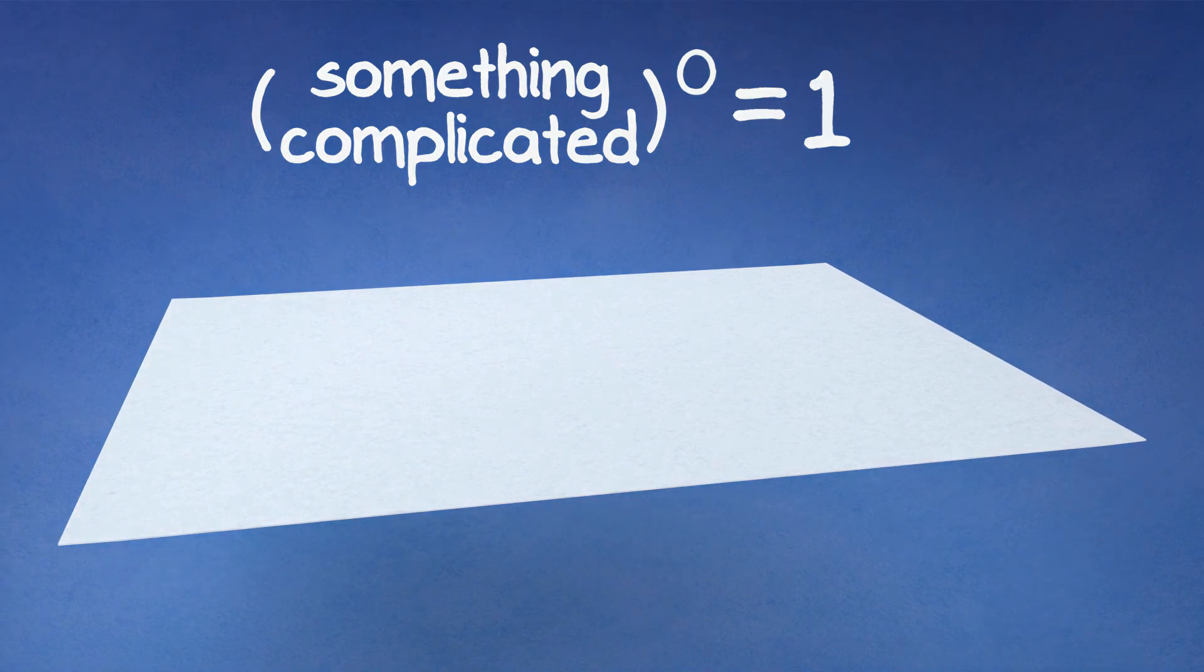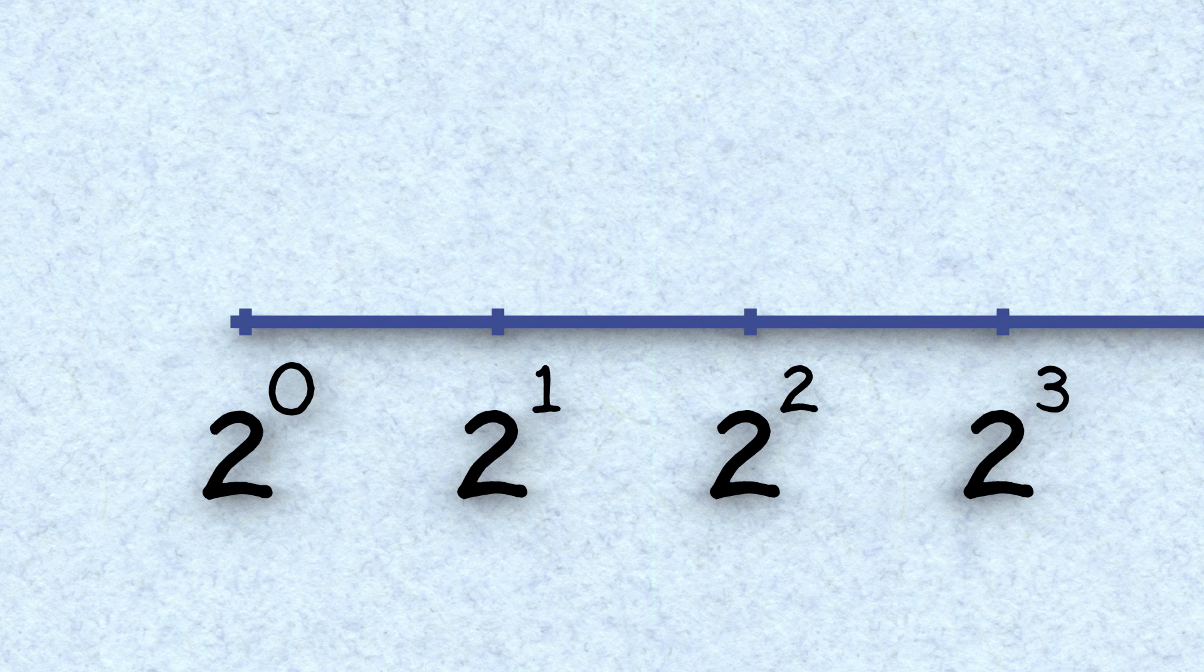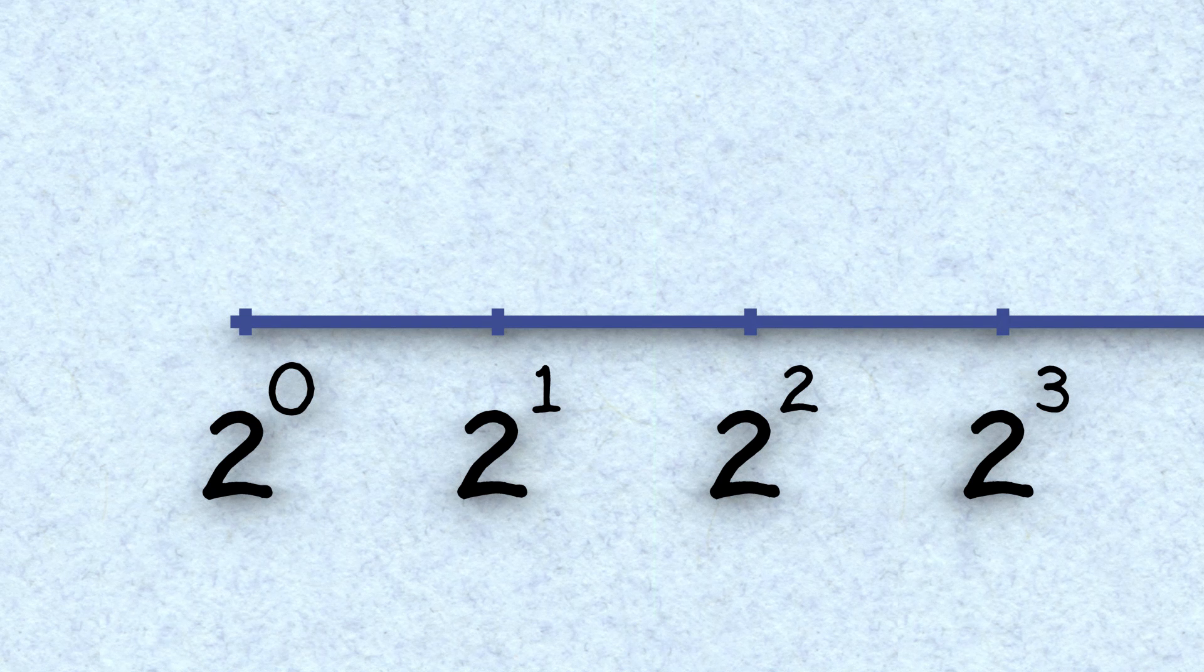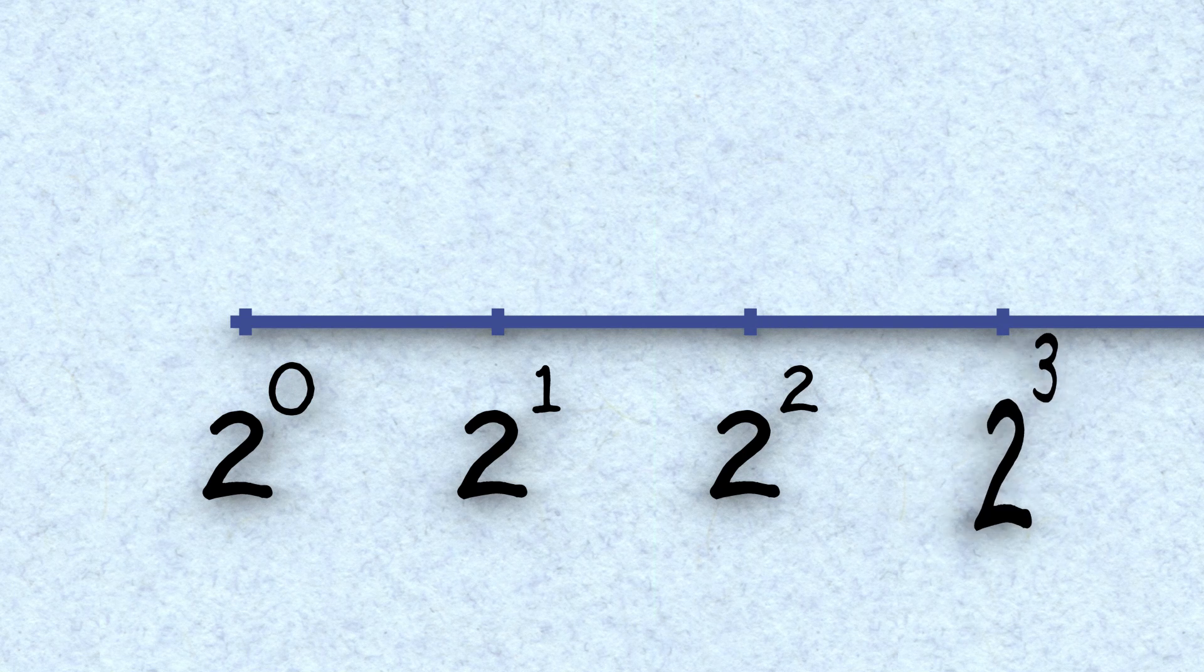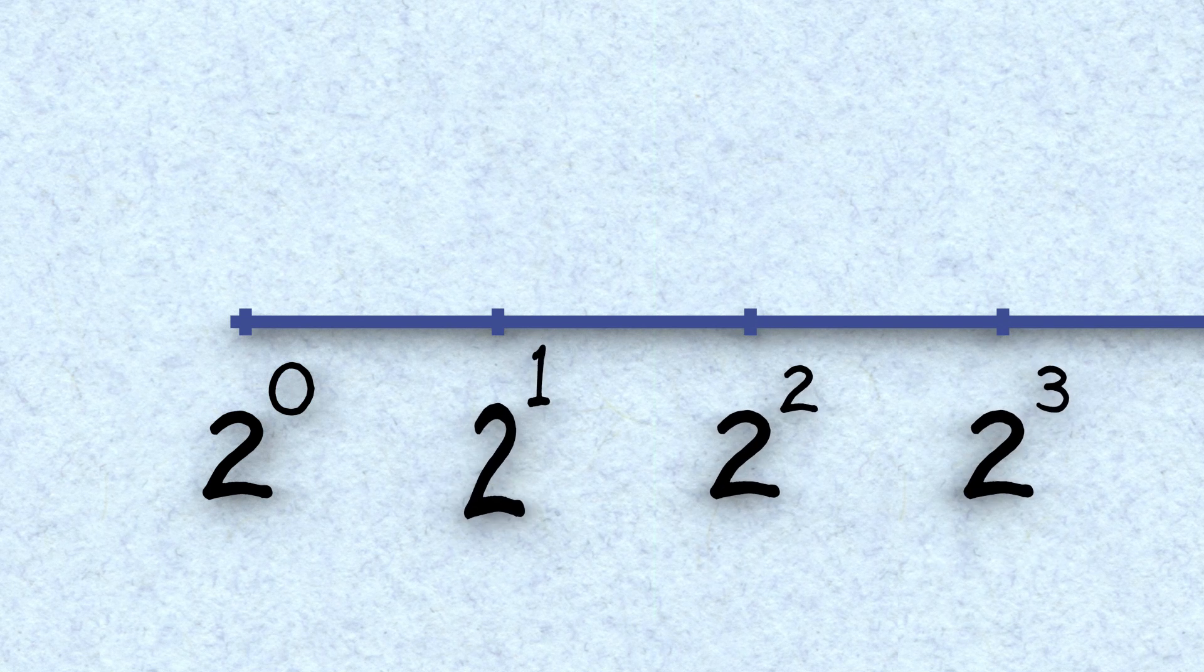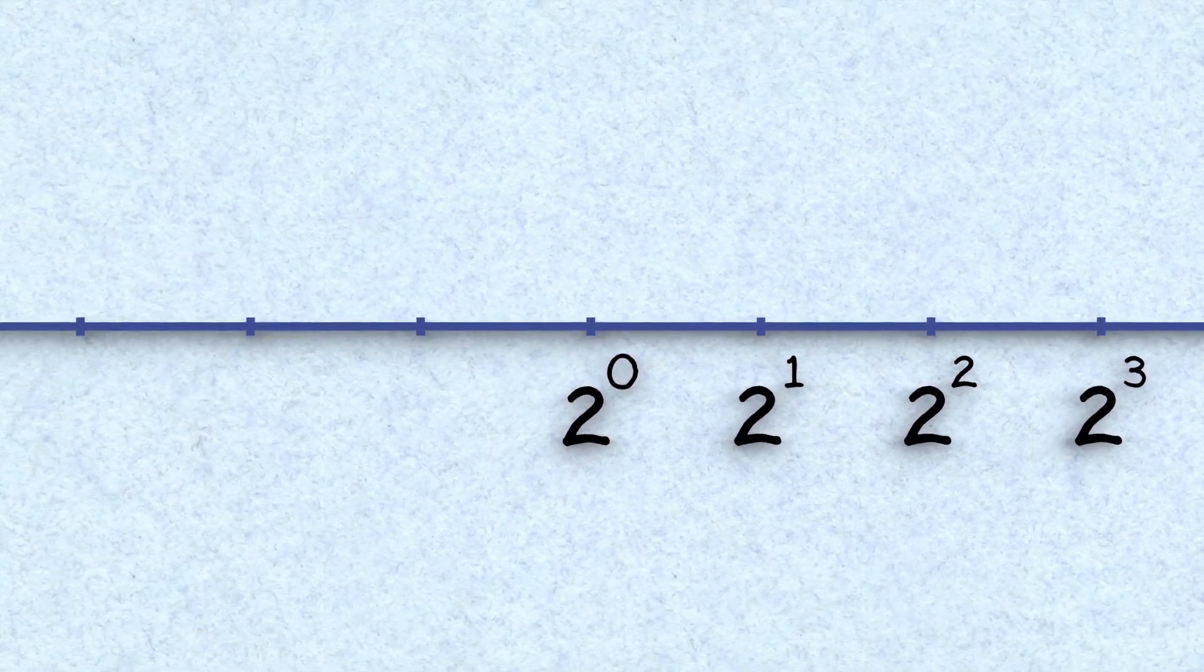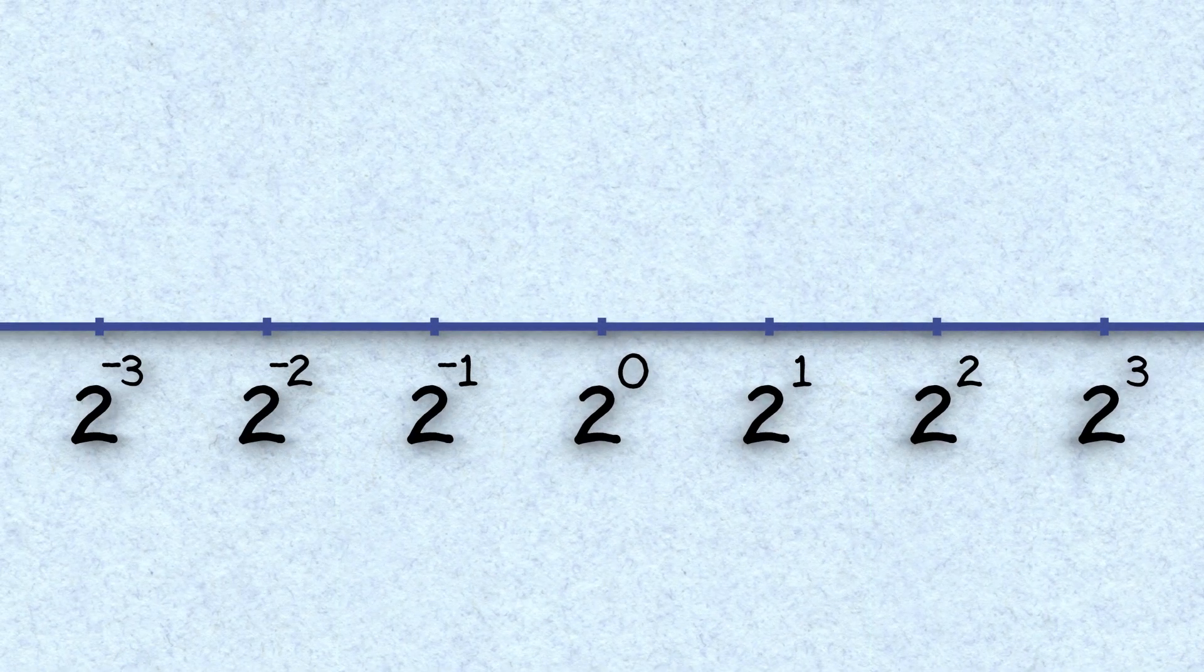Before you think this is a trick based on the paper model and is just a sleight of hand, let's see how the exponent of zero fits into a larger pattern. Moving down the number line, we've seen exponents of three, two, one, and on down to zero. Let's keep going and see what we'd get with negative exponents.